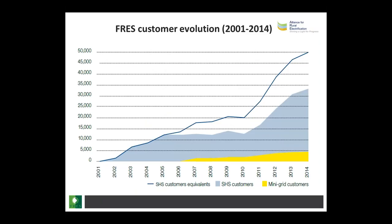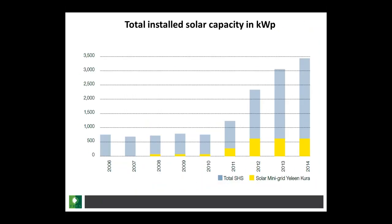Looking at the evolution of the customer base since our establishment in 2001, SHS customers remain our core customers. From 2006 you can see the evolution of mini-grid customers coming through. There was a dry patch from roughly 2006 to 2010 where there was really an absence of funding — we used that time to do a lot of market research on which countries we wanted to operate in. From 2011 we started to expand and started up three new companies in 2008, 2011, and 2012 in Burkina Faso, Uganda, and Guinea-Bissau. With that comes the growth in PV capacity and customers.